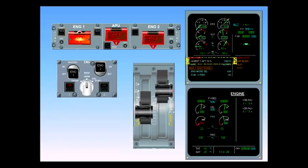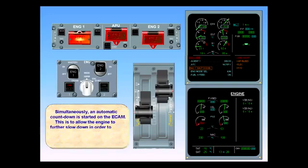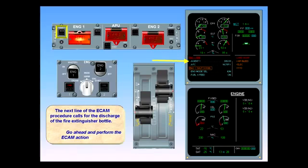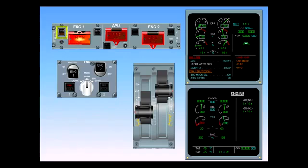Simultaneously, an automatic countdown is started on the ECAM. This is to allow the engine to further slow down in order to increase the effectiveness of the agent. The next line of the ECAM procedure calls for the discharge of the fire extinguisher bottle. Go ahead and perform the ECAM action. The discharge light illuminates on the agent one push-button. This means that the fire extinguisher bottle is depressurized.